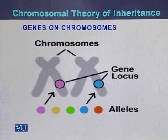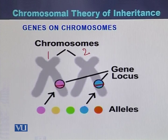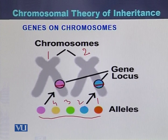From this diagram, we can see that chromosomes are present in the form of homologous pairs — homolog 1 and homolog 2 — and there is a gene locus at a position on the sister chromatid. One allele is present on one homolog while the second allele is present on the second homolog. These are different alleles of that gene — allele 1, allele 2, allele 3, allele 4, allele 5 of the same gene — because some genes have two alleles while others have more than two alleles.